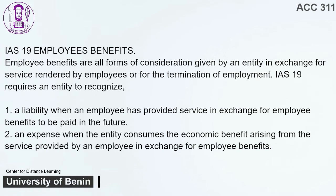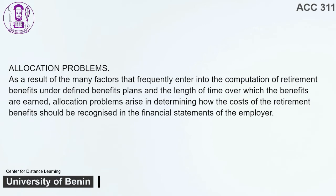IAS 19 — Employee Benefits. Employee benefits are all forms of consideration given by an entity in exchange for service rendered by employees or for the termination of employment. IAS 19 requires an entity to recognize: 1. A liability when an employee has provided service in exchange for employee benefits to be paid in the future. 2. An expense when the entity consumes the economic benefit arising from the service provided by an employee in exchange for employee benefits. Allocation problems arise in determining how the costs of retirement benefits should be recognized in the financial statements of the employer.